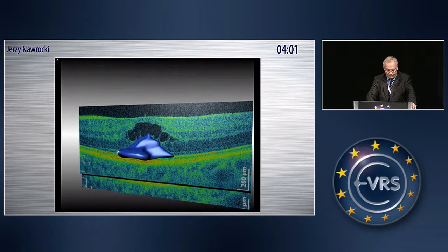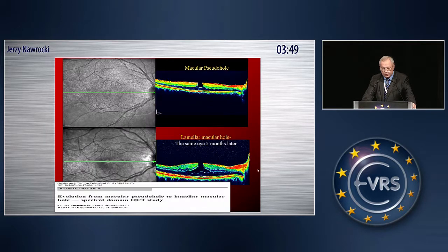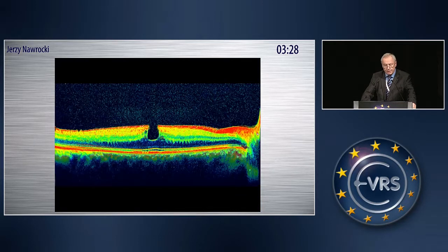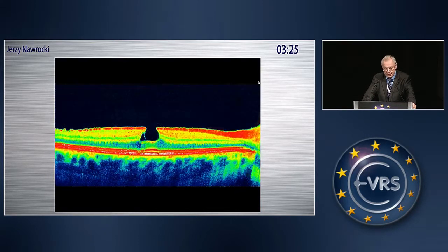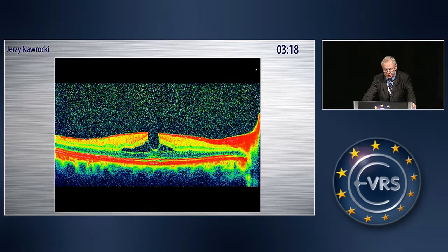We looked at follow-up in several eyes and found they changed their appearance over time. Here you see a Spectralis examination of a macular pseudo hole which changed its appearance into a lamellar macular hole over five months of follow-up. The question is: does one interface disease move to a retinal capillary disease? For me, that is not possible.